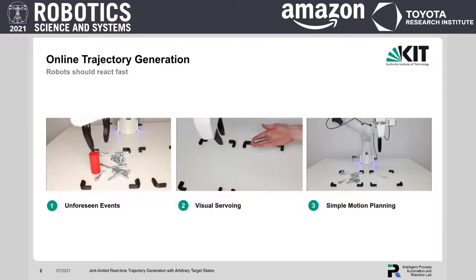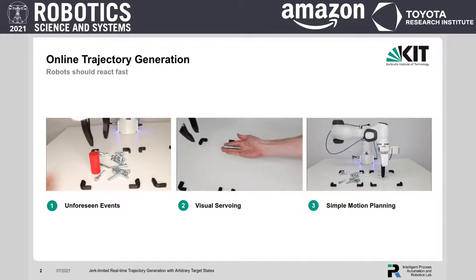Of course, the trajectory needs to follow some constraints, and for many robots, like our Franka Emika, this should be not only constraints of the velocity and acceleration, but also for the jerk.